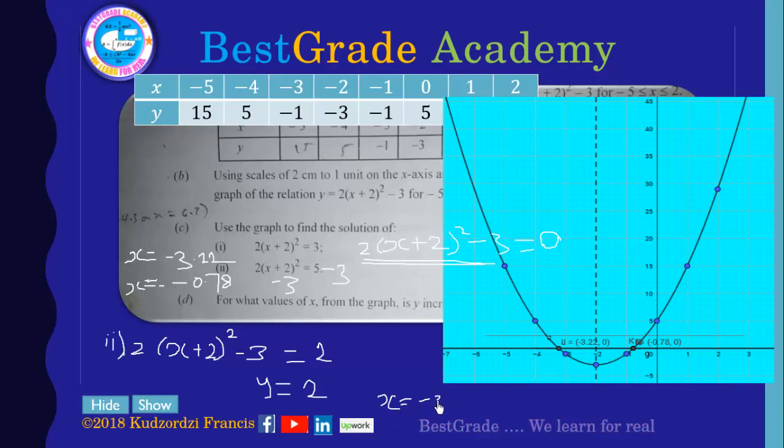So over here we have x to be equal to negative 3.6. And this point is x equals negative 0.4 to 1 decimal place.